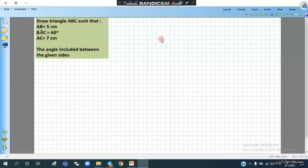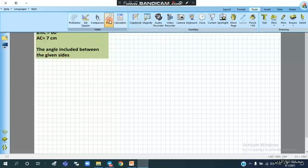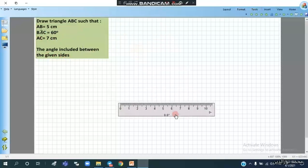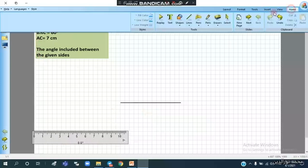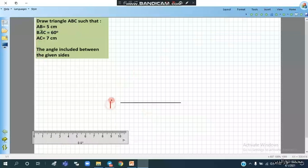So first of all, I will make the longest side. We use the ruler and draw AC, 7 cm. We will start from 0 to 7 cm, and this side will be called AC. So this is A and C.